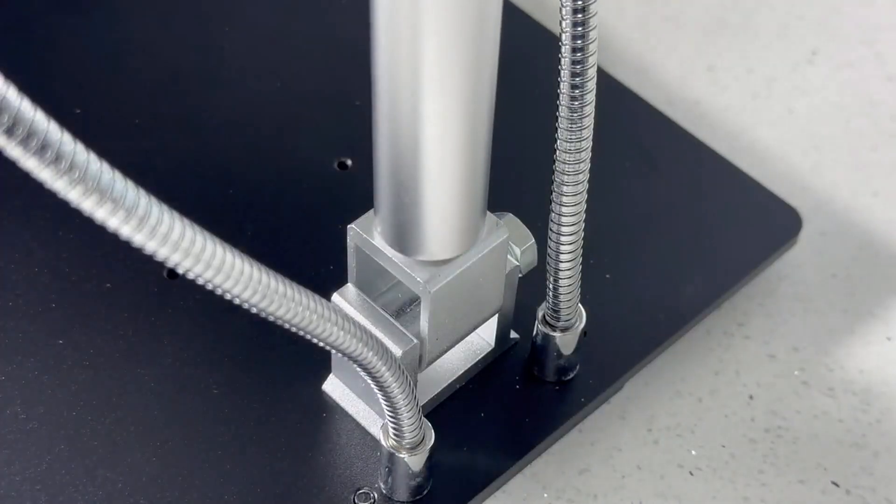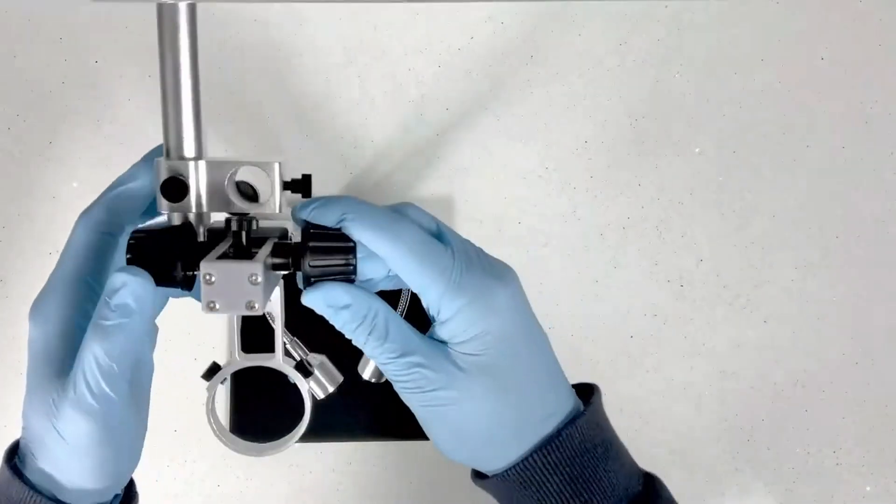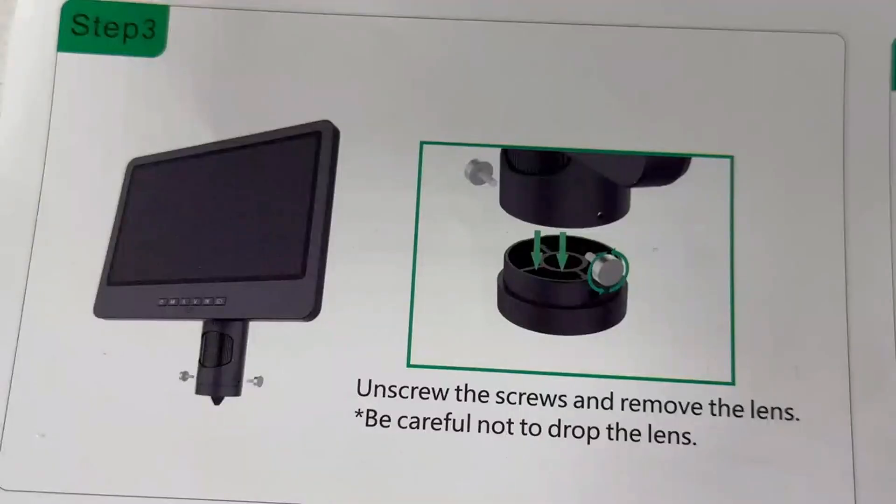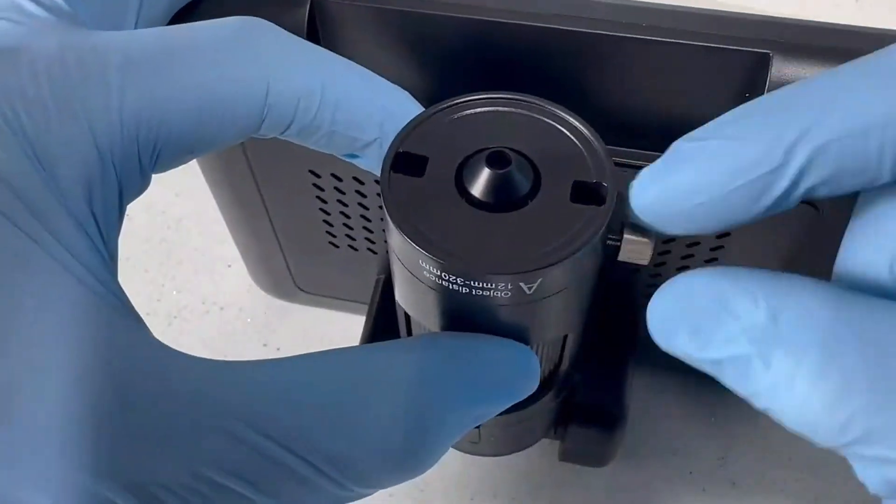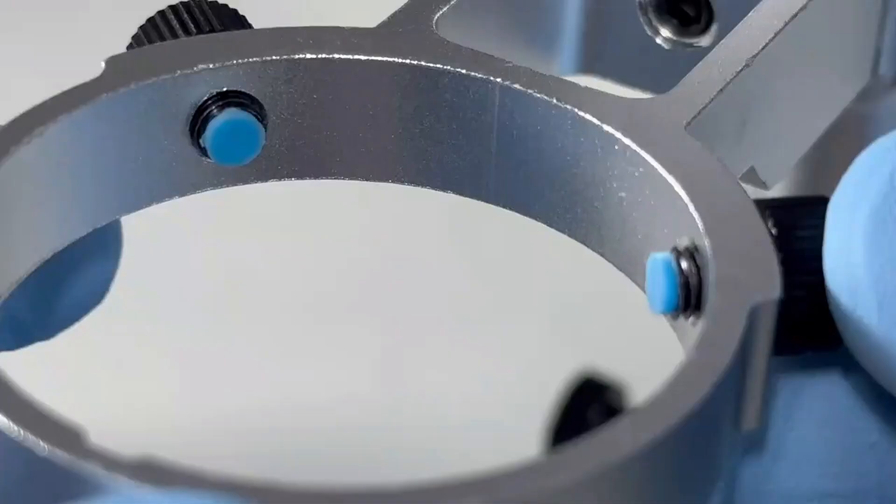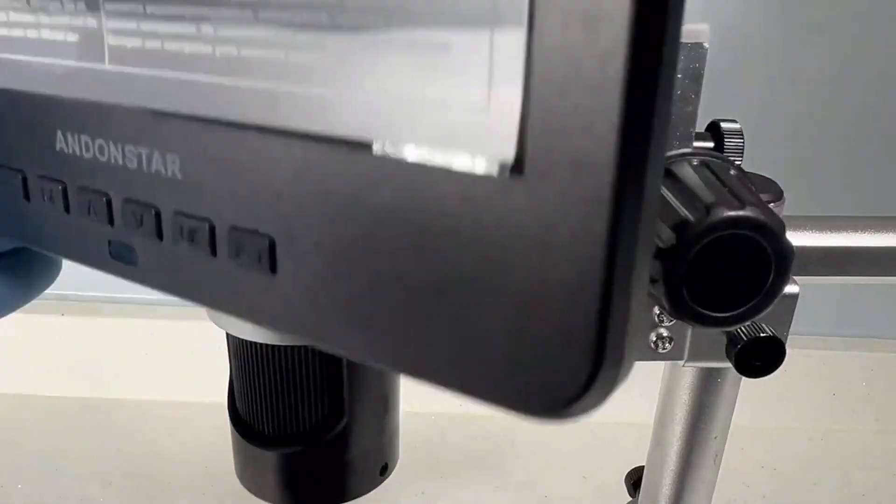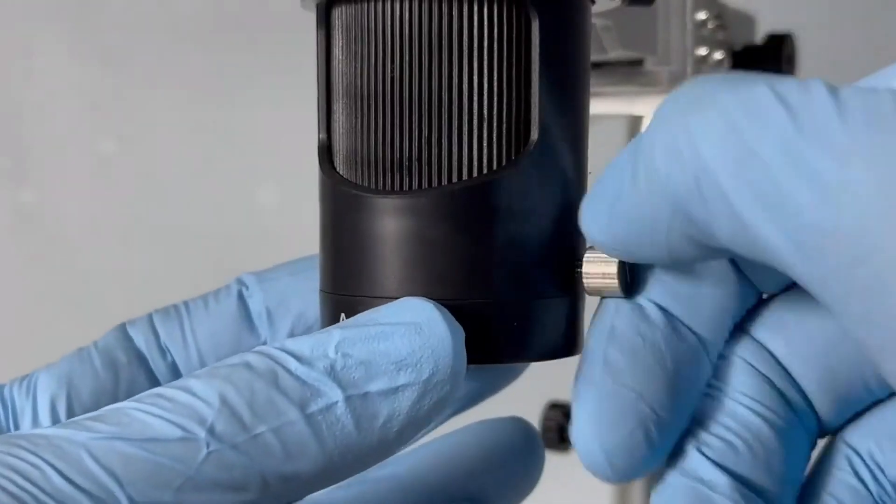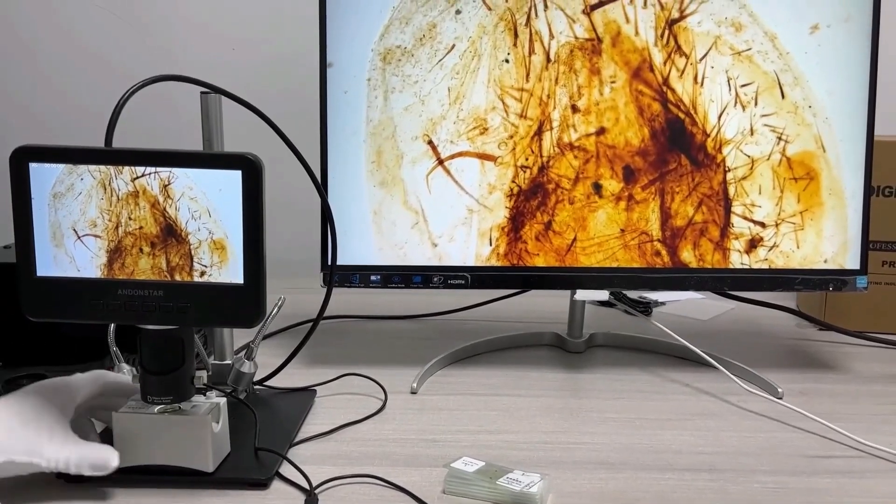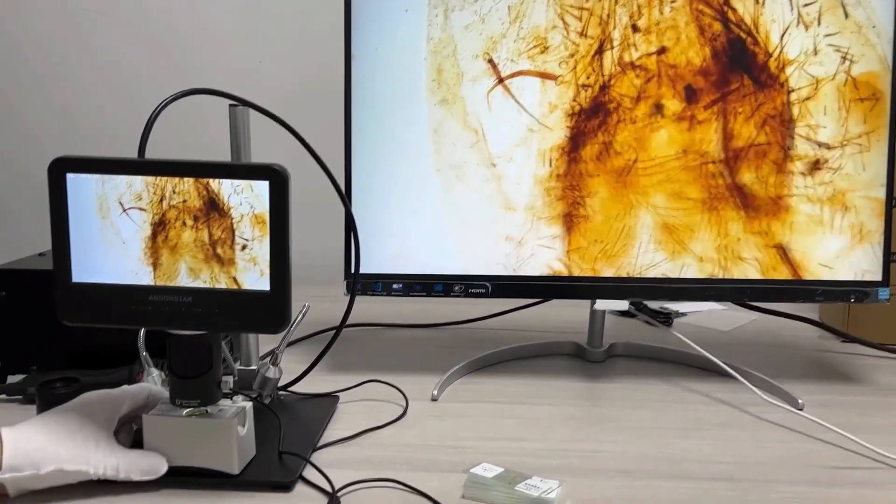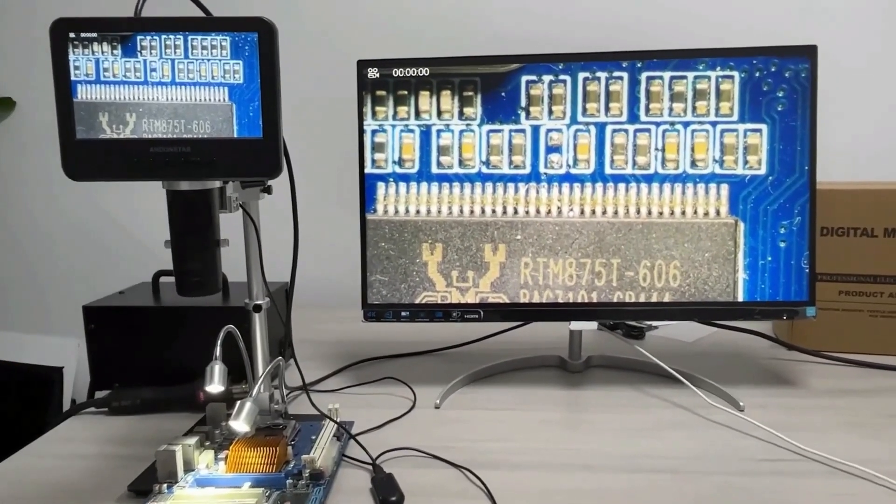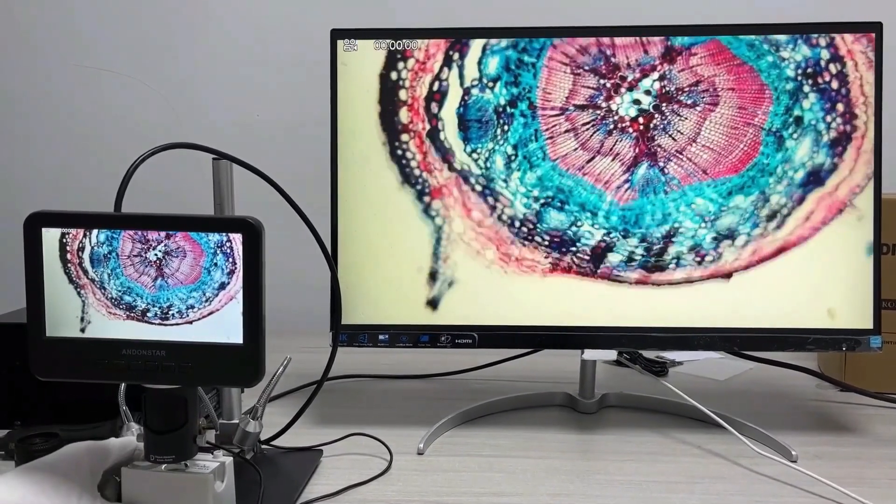Capture your findings effortlessly. With the included micro SD card, you can take and store photos or videos of the fascinating micro world you observe. This microscope isn't just for serious projects, it's also a fun tool for exploration. With the Andenstar 3 lens digital microscope, you're all set for an exciting journey into the world of the tiny and detailed.